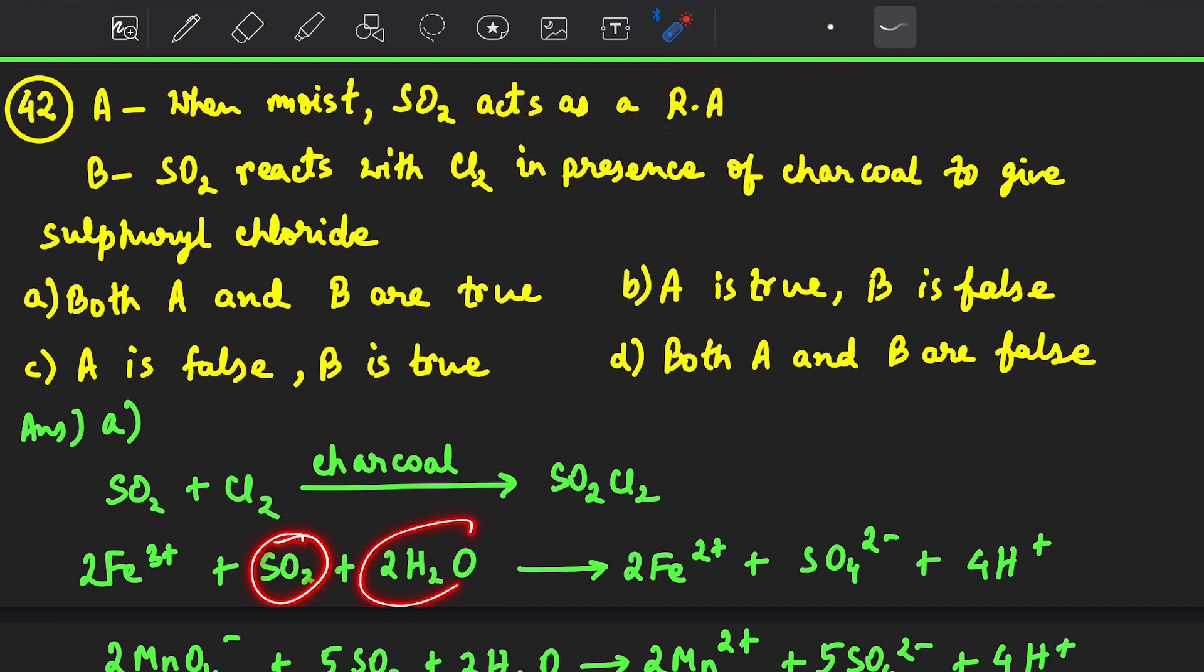Sulfur dioxide, here you see in presence of moisture that is water, it will reduce Fe3+ to Fe2+ and itself get oxidized to sulfate. Because in sulfate, oxidation state of sulfur is plus 6.